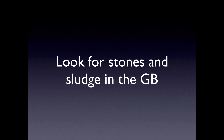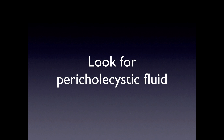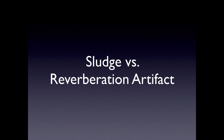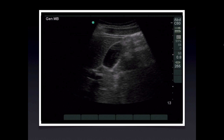While we're scanning through the gallbladder, we look for stones and sludge within it while looking for pericholecystic fluid around it. One potential pitfall is mistaking reverberation artifact for sludge. Sludge is dependent, whereas reverberation artifact will be seen on the side of the gallbladder closest to the probe. This is a good example of a reverberation artifact — you can see it located towards the top of the gallbladder, it goes beyond the gallbladder walls, and it's not located dependently like sludge would be.